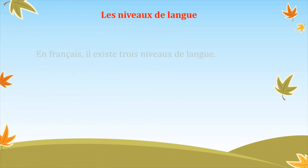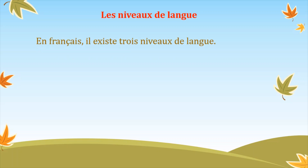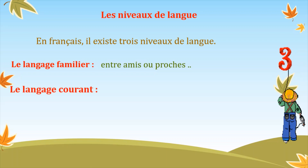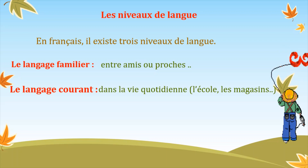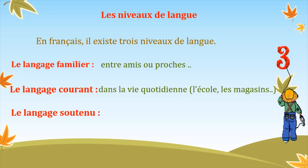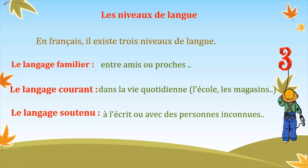Pour bien comprendre, on peut dire qu'en français, il existe trois niveaux de langue. Le premier, c'est le langage familier, qu'on utilise entre amis ou proches. Le deuxième, c'est le langage courant, et c'est le langage qu'on utilise dans la vie quotidienne, par exemple à l'école, les magasins. Le troisième, c'est le langage soutenu, et ce langage-là, on l'utilise à l'écrit ou avec des personnes inconnues.